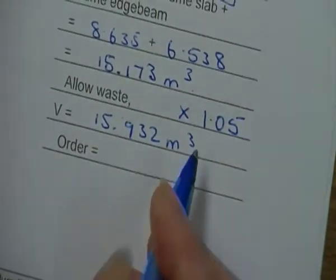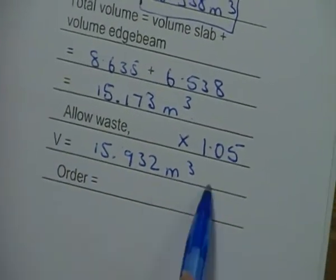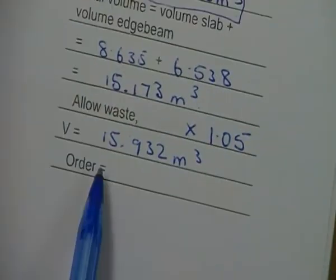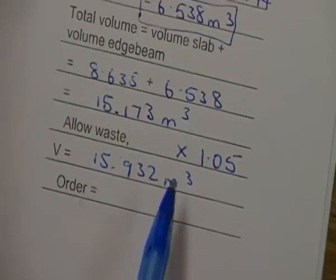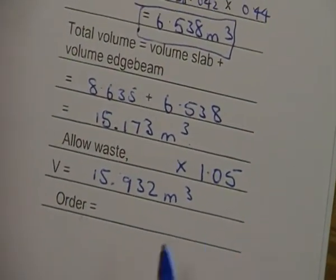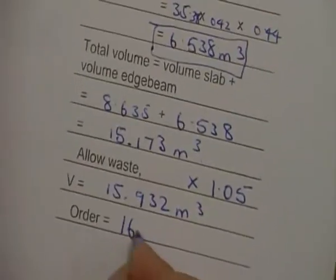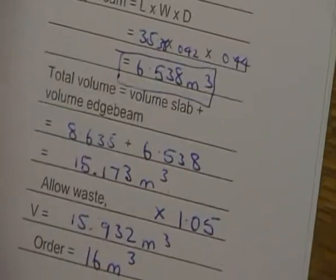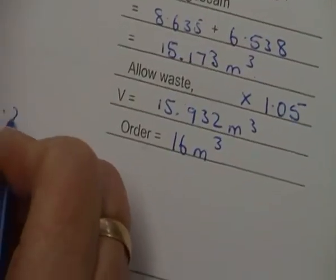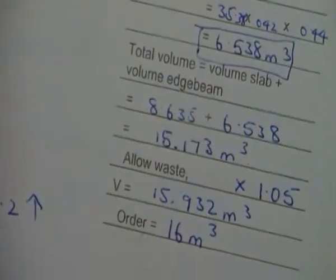Now that is the volume, but that is not the concrete order. I want to ring up or text or email somebody. I have to order 16 meters cubed, remembering we're doing increments of 0.2, rounding up for concrete orders.